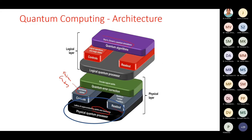One important thing to remember: quantum computers give a speed-up for certain problems, not every problem. To get speed-up, you need a clever quantum algorithm that exploits quantum parallelism. There are a limited number of quantum algorithms that give speed-up — mainly Shor's, Grover's, and others. For certain problems there are efficient quantum algorithms giving speed-up; for others, we don't have efficient quantum algorithms yet.